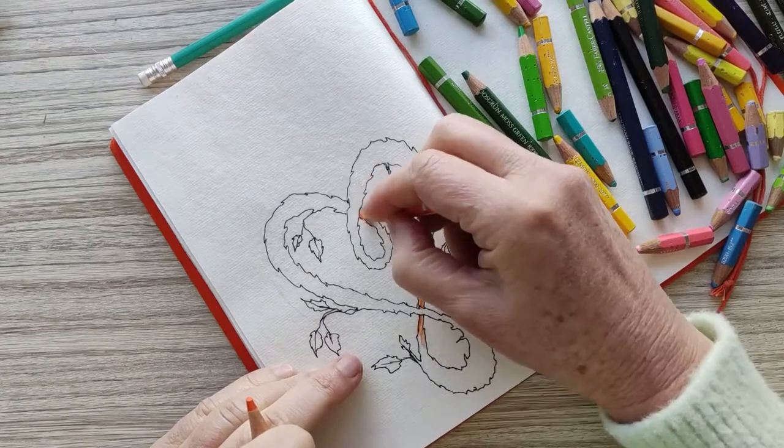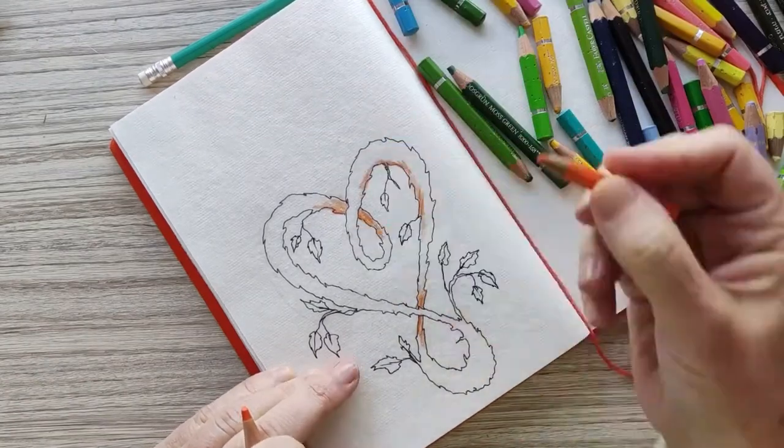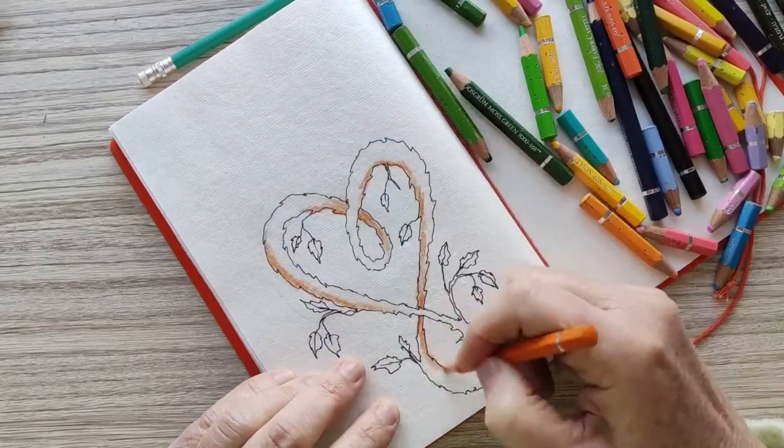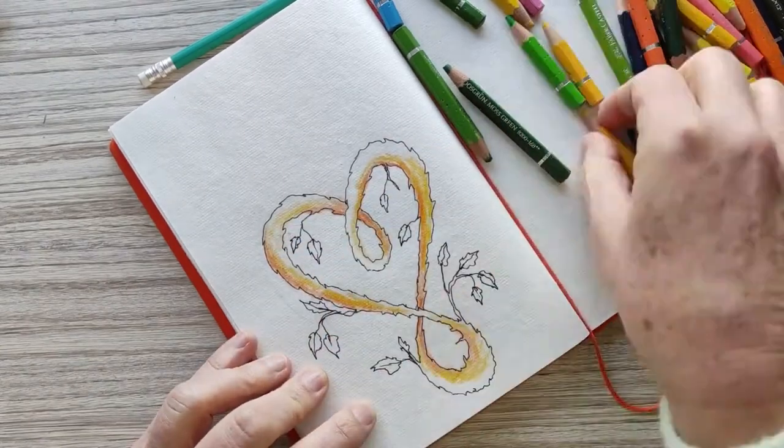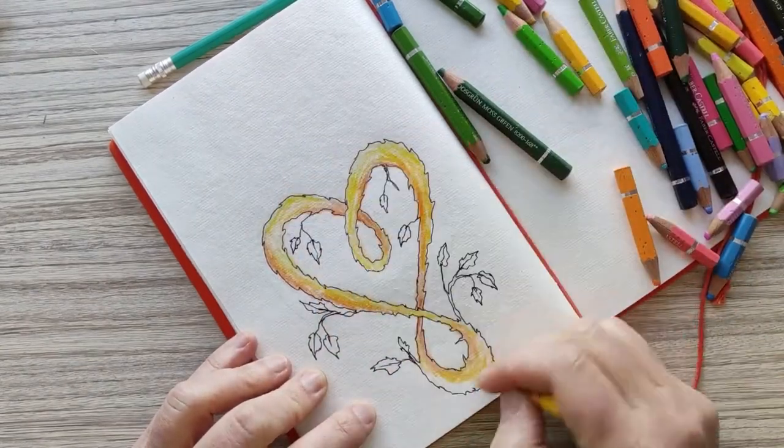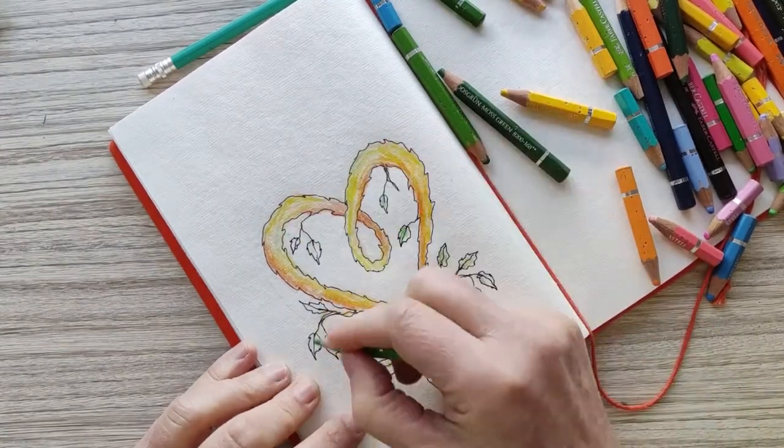After we have that basic framework we can start working with the colors. I start with a darker color for the parts that are shaded so it's the connection parts and the inner parts, and then adding on more.